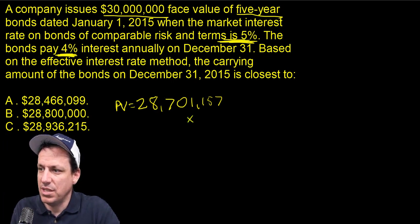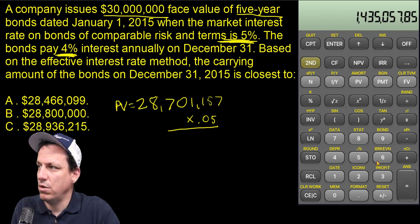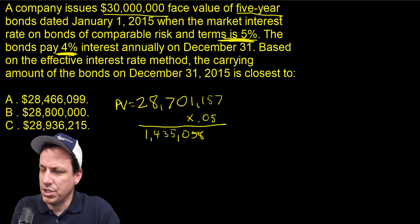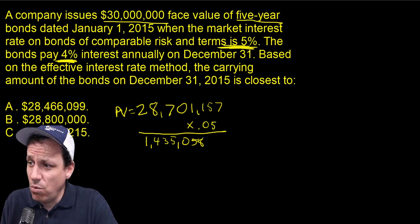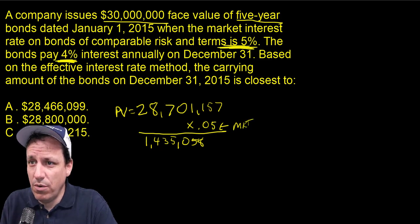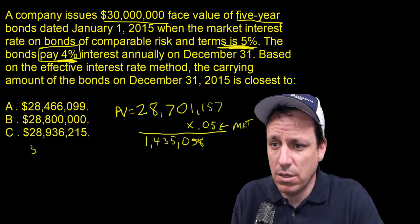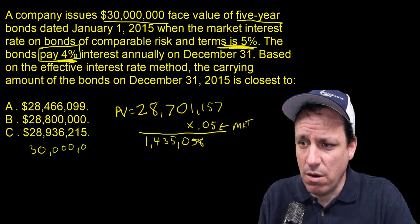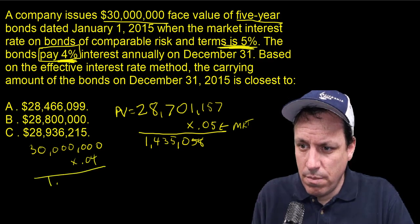What we need to do is take that present value times the market rate of interest, which is 5%. So $28,701,157 times 0.05 equals $1,435,057 — we'll call it $1,435,058. You have to make sure you're pulling the right percentages to get the right answers. We've used the market rate here. Our coupon rate is 4%, so $30 million times 4% equals $1,200,000.